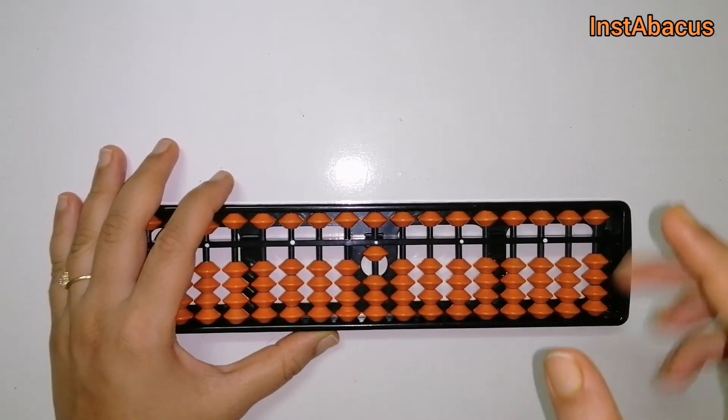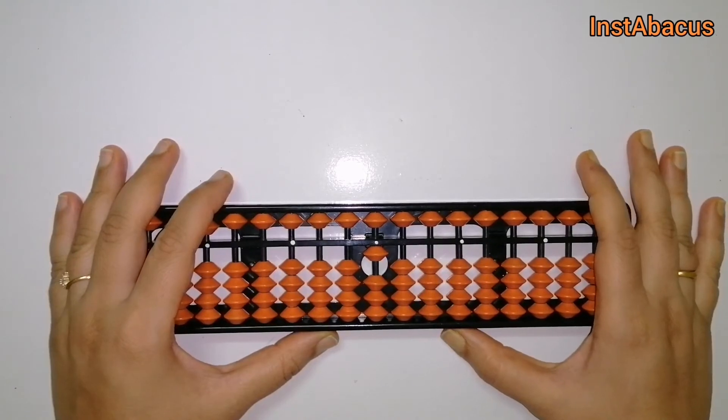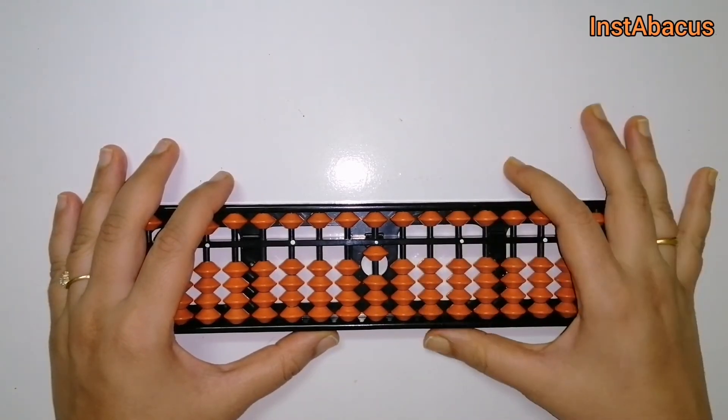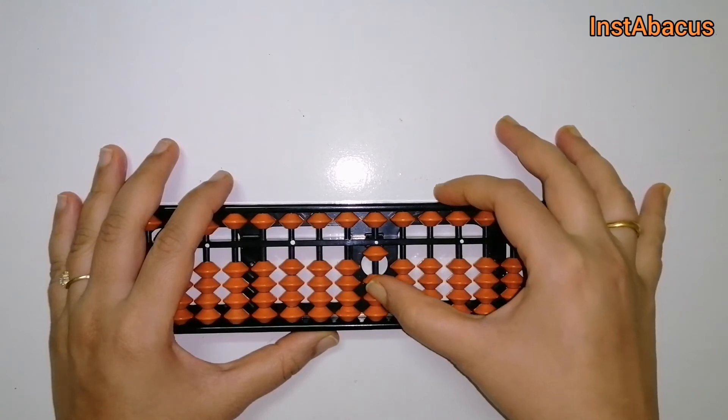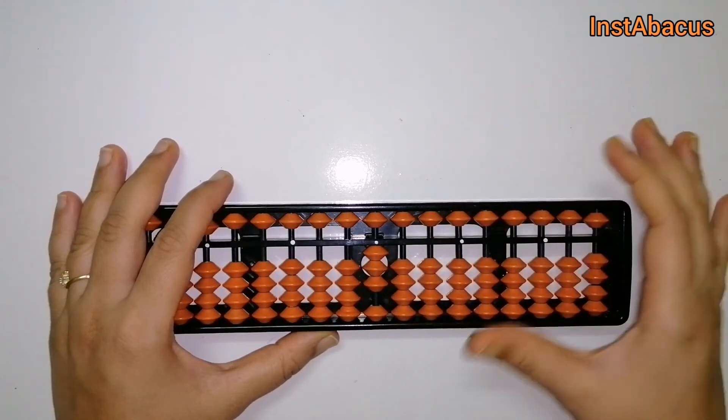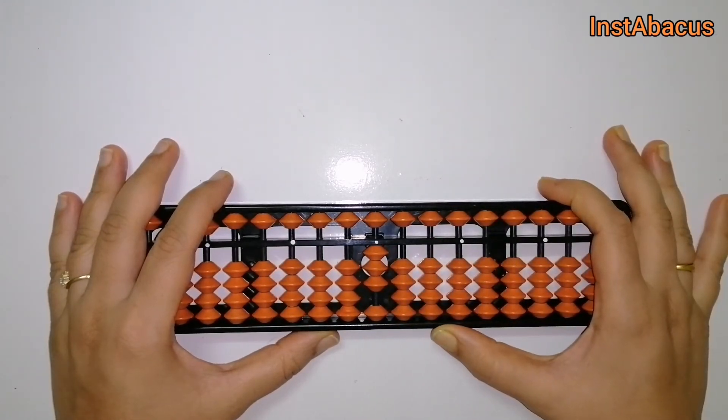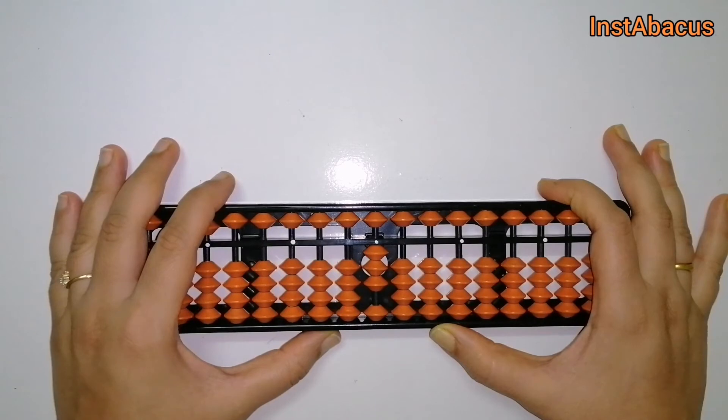Now to this we are going to add two by moving two more earthly beads up, so that becomes three. And to this we are going to add three, and for that we are going to use a small friend.